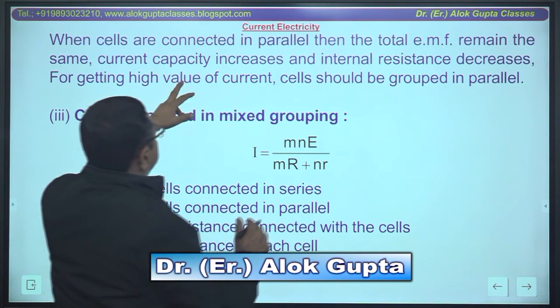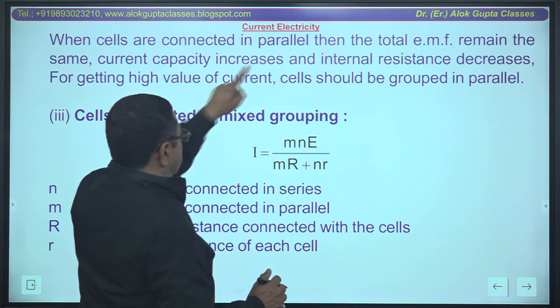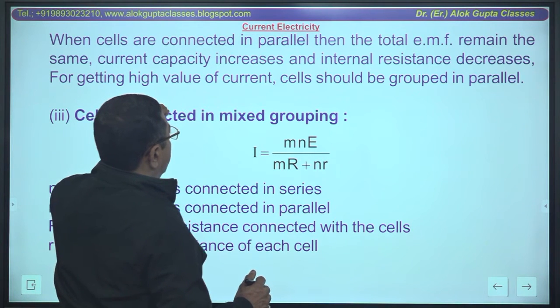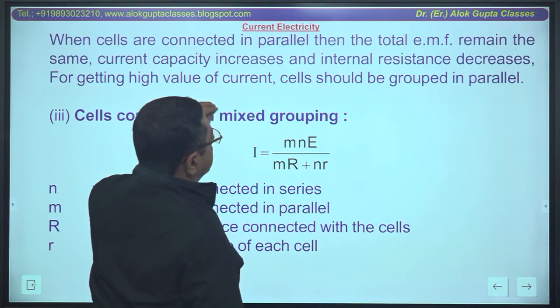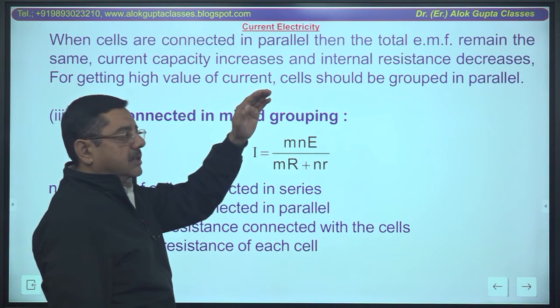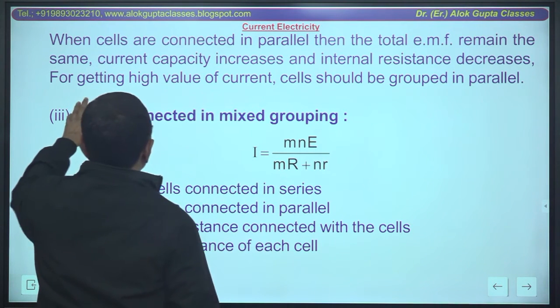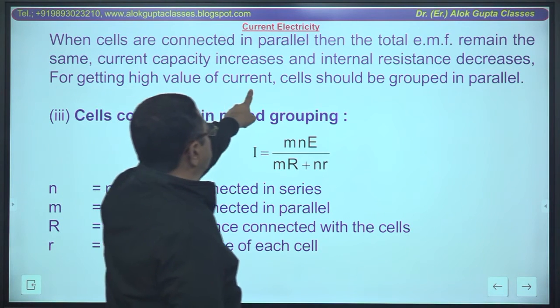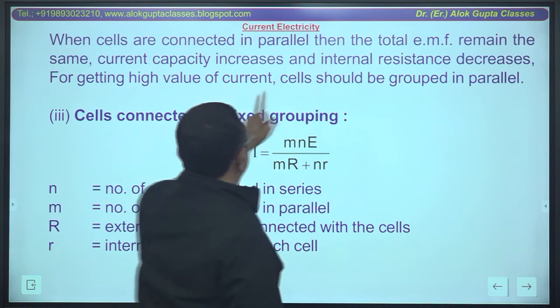Current capacity increases - from each cell current adds up. And internal resistance decreases. If n cells are there, internal resistance becomes r by n. For getting high value of current, cells should be grouped in parallel.